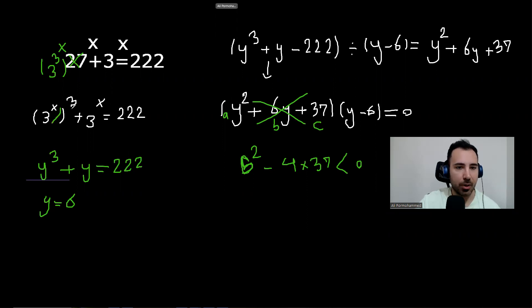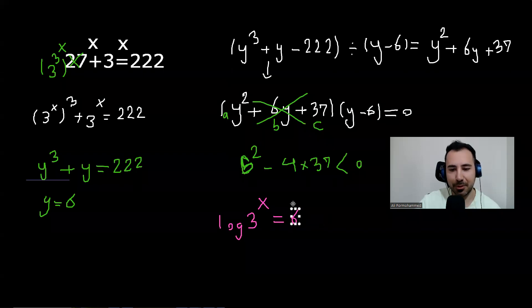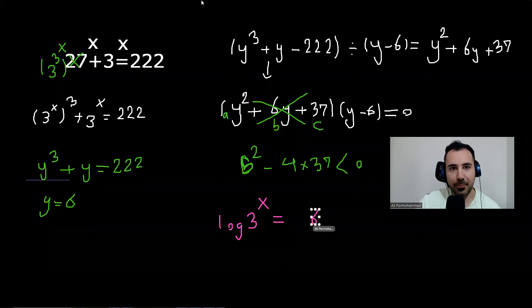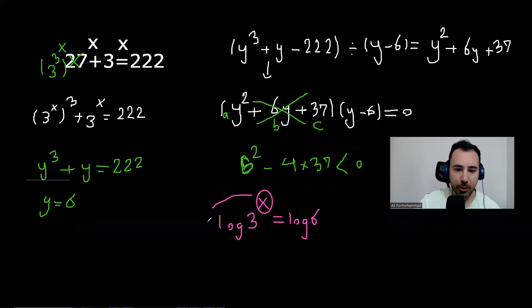Remember, we called this y. So we know the question has become very easy now. 3 to the power of x equals 6. Now, how do we solve this one? Easy, isn't it? You could use your calculator. We add logarithm to both sides. So logarithm of this equals logarithm of 6. We know that in a logarithm, this could come here, so it's going to be x multiplied by logarithm of 3 equals logarithm of 6.